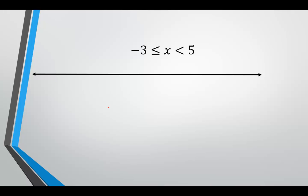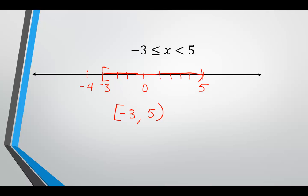A similar one: negative 3 is less than or equal to x, which is less than 5. Locate negative 3 on the number line: negative 2, negative 1, 0, 1, 2, 3, 4, 5. Negative 3 is less than or equal to x means x is to the right of negative 3, and since it says or equal, we need a bracket. It's less than 5, so it's to the left of 5, with 5 not included, so we need parentheses. Interval notation: bracket negative 3, comma, 5, close parentheses. I hope this helps — if you need more assistance, please just ask.